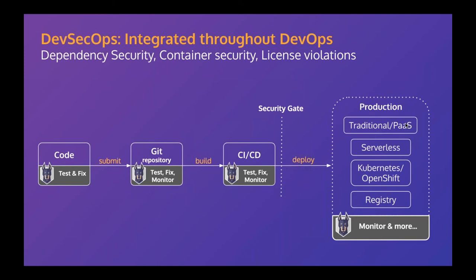The configuration of security gates is completely customer-specific and customizable. Many customers start with a 'stop the bleeding' approach — find all existing issues first, then prevent anything new from getting into the code. From there you can also address all existing issues if the application is important enough.